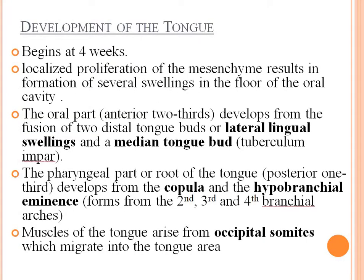The development of the tongue begins at four weeks. Localized proliferation of the mesenchyme results in the formation of several swellings in the floor of the oral cavity. The oral part, anterior two-thirds, develops from the fusion of the two distal tongue buds, or lateral lingual swellings, and a median tongue bud, the tuberculum impar.